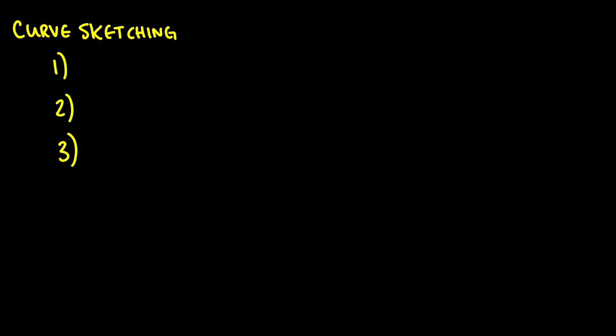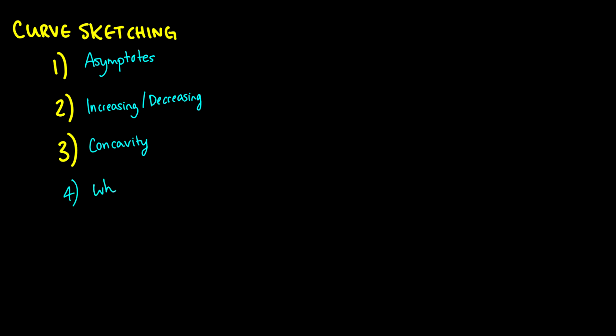In this video we're going to be taking a look at curve sketching and actually drawing graphs using everything we've learned in the past three videos. When we sketch graphs we need to know three critical things: where our asymptotes are (looking at the domain and the limit as x goes to infinity and negative infinity), where our graphs are increasing and decreasing, and the concavity between intervals by looking at inflection points and second derivatives. And of course a fourth point — you need to know where the points are, so just plug in some values into your function.